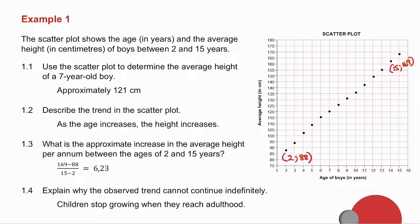1.4 says: explain why the observed trend cannot continue indefinitely. Children don't keep growing forever as they get into adulthood — they stop growing.